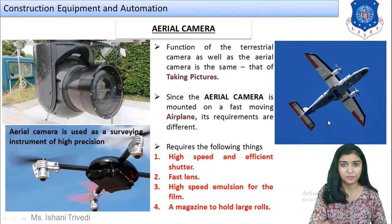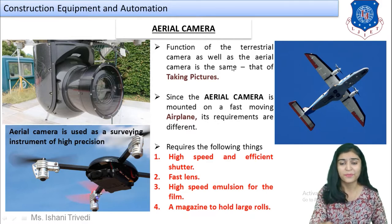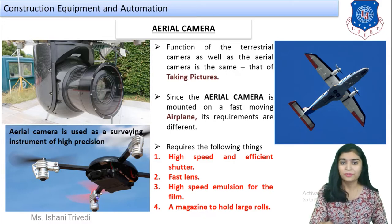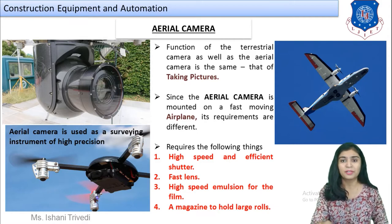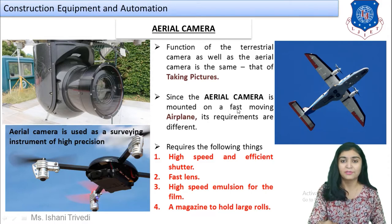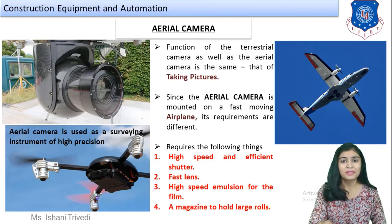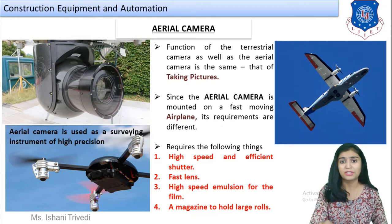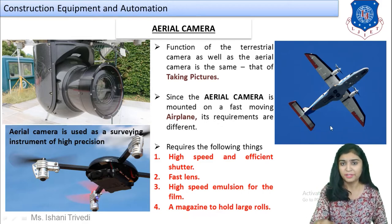The function of the terrestrial camera and the aerial camera is the same — both are used for taking photographs. However, since the aerial camera is mounted on a fast-moving aircraft, its requirements are different. For a terrestrial camera, a tripod stand or basic survey equipment is sufficient, but the aerial camera's requirements are far more critical.